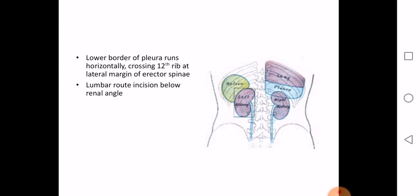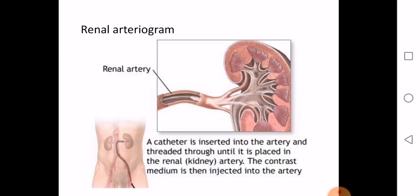An IVP x-ray will be kept for your practical exams. In the image, you can see the calyces, the ureter, and the major and minor calyces that are visualized.